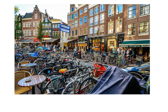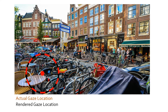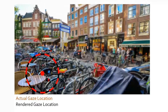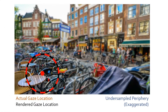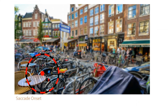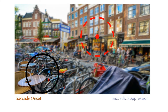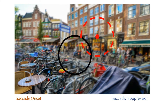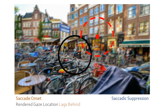Standard gaze-contingent rendering provides images according to the current gaze location. Here we show an example of foveated rendering, where during a fixation high quality is provided to the fovea region and lower quality to the periphery. During a saccade, the actual gaze location moves towards a new fixation location; the gaze prediction follows but is delayed due to system latency. The mismatch between the actual gaze location and the eye tracker prediction results in wrong quality being provided to the fovea region during the saccade.